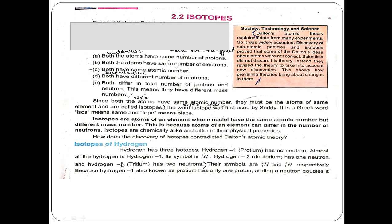The symbol H represents: the superscript is the mass number and the subscript is the atomic number, which is the number of protons. The nucleus of hydrogen-1 has 1 proton and the number of neutrons is 0.